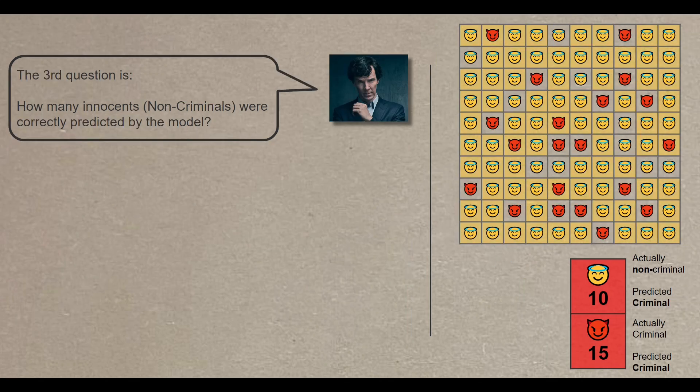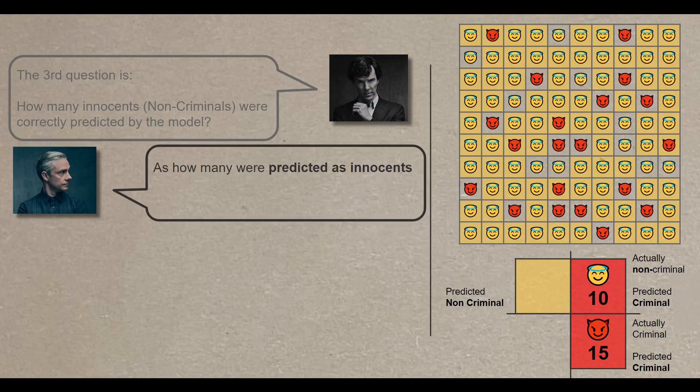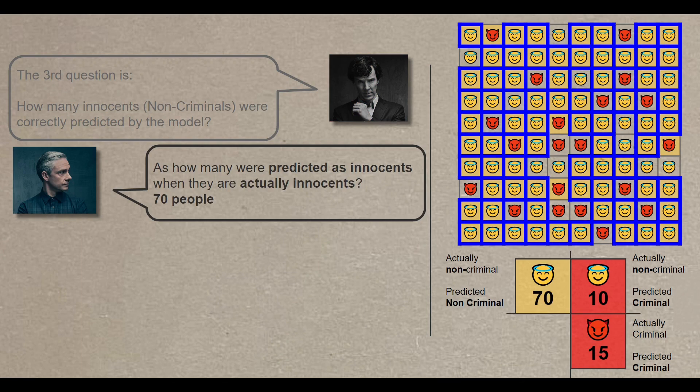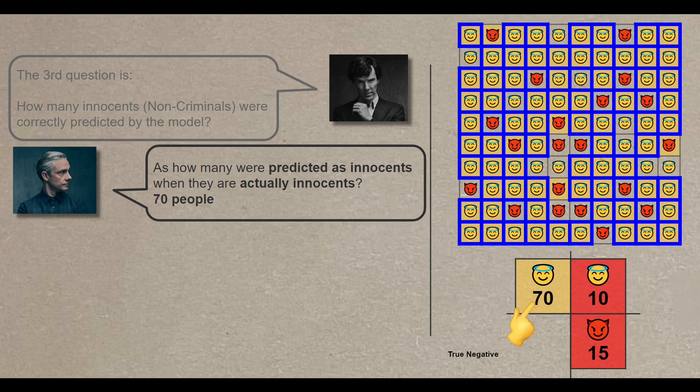Two more questions. The third question is how many innocents were correctly predicted by the model? So how many were predicted as innocents when they are actually innocents? That would be 70 people. And this is known as true negative. True because the prediction aligns with reality, yellow shade, yellow emoji, and negative because the prediction negates that the person is a criminal.